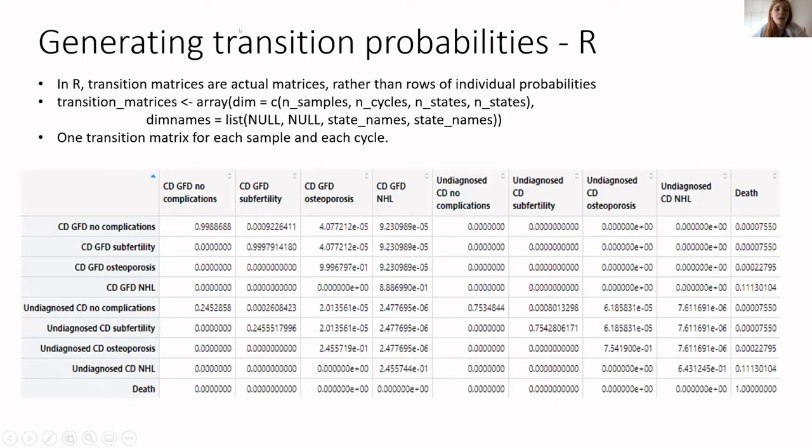In R, the advantage is that transition matrices are actual matrices rather than rows of individual probabilities. So once you get your head around this idea of matrices and what they look like and how they work and matrix multiplication, etc., then this is a lot more intuitive, I find. You generate your transition matrix and you have one for every sample and every cycle in your model, which makes a lot more sense, especially when you have transition probabilities that vary depending on your cycle or depending on age. And it's nice that you can generate transition matrix and see something like this showing all your transitions between your states at whatever time point you're interested in, which is something that you just don't normally do in Excel.